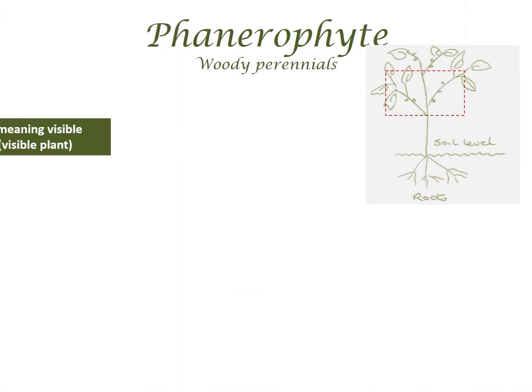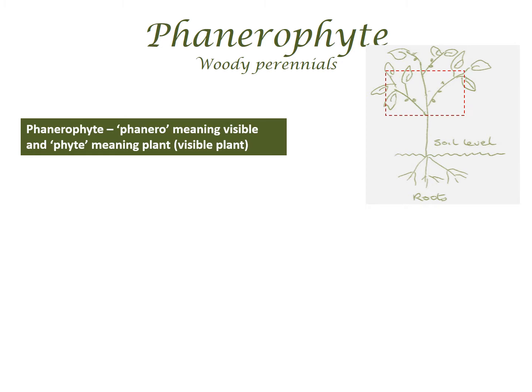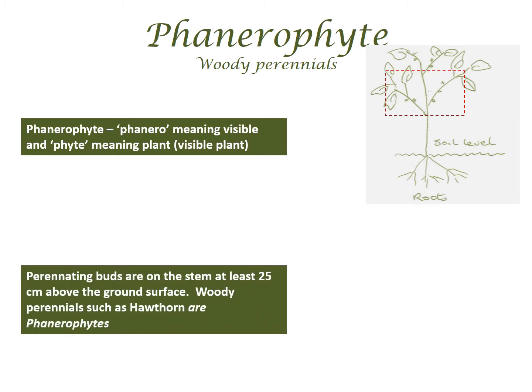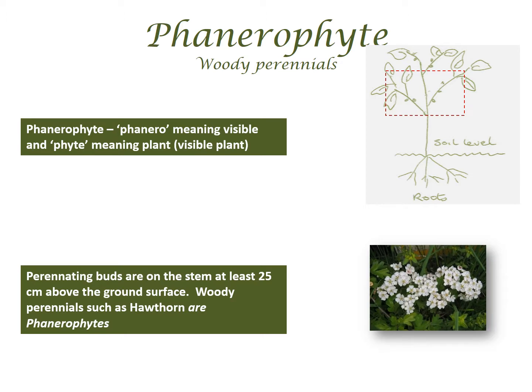Phanerophytes — phanero meaning visible and phyte meaning plant; visible plant. Perennating buds are on the stem at least 25cm above the ground surface. Woody perennials such as hawthorn are phanerophytes.